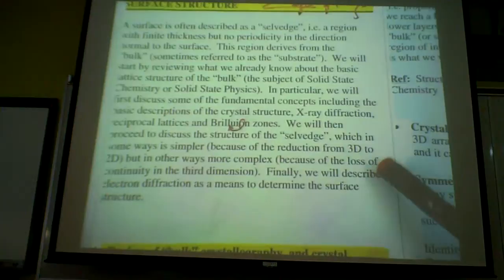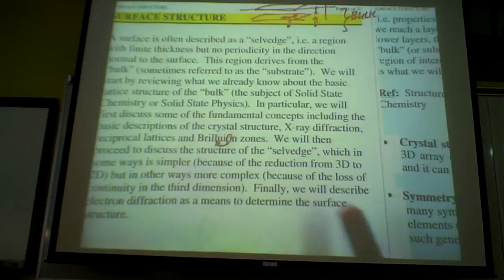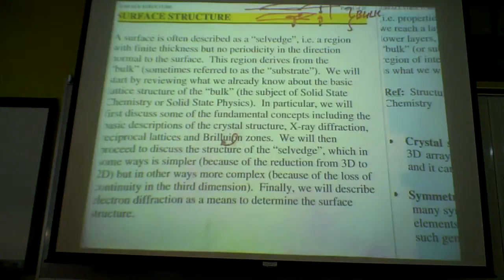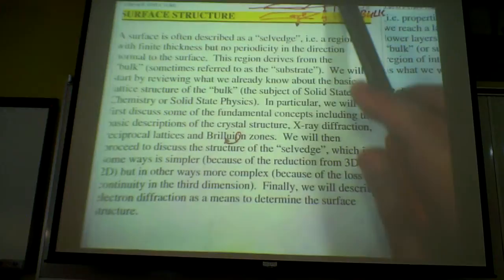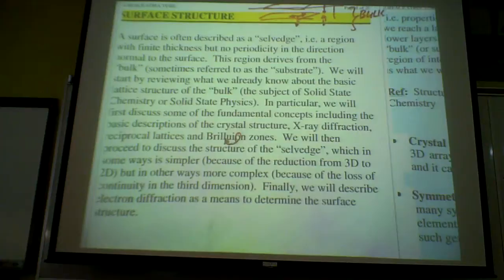Then we will proceed to talk about higher up, this self-edge that I have, to look at 2D, going from reduction of dimension from 3D to a 2D structure. In some ways, this is more complex because of loss of continuity in the third dimension, but in some other ways, it's more similar. In this case, we will use an analogous technique. Instead of x-ray diffraction, we look at electron diffraction as a means to determine the surface.